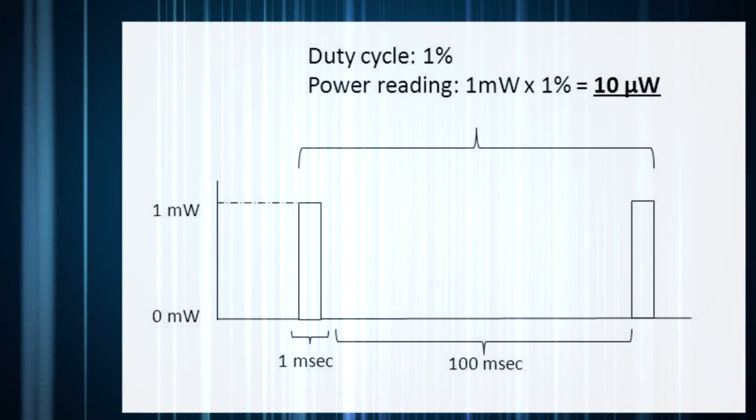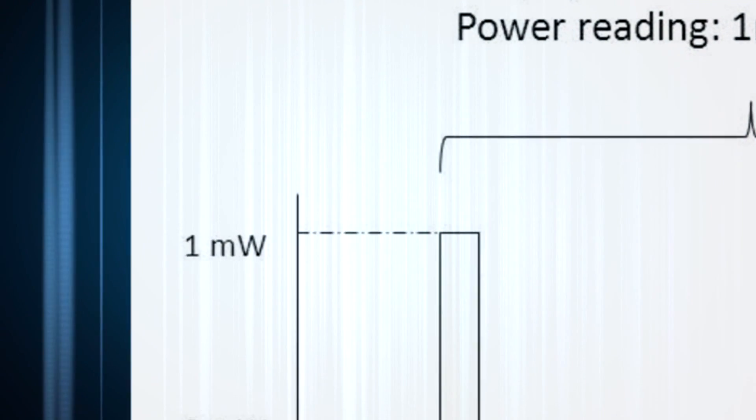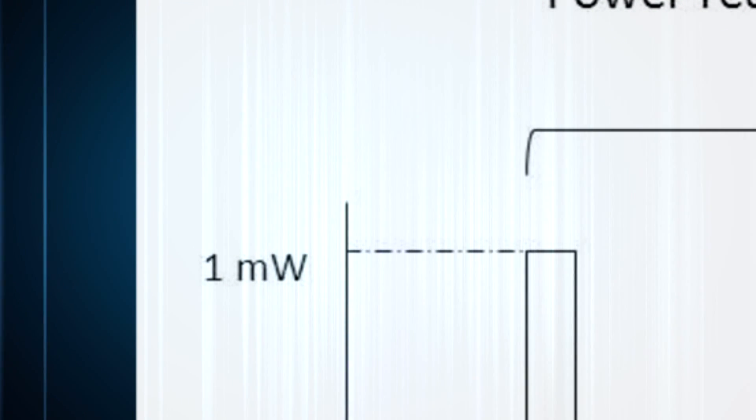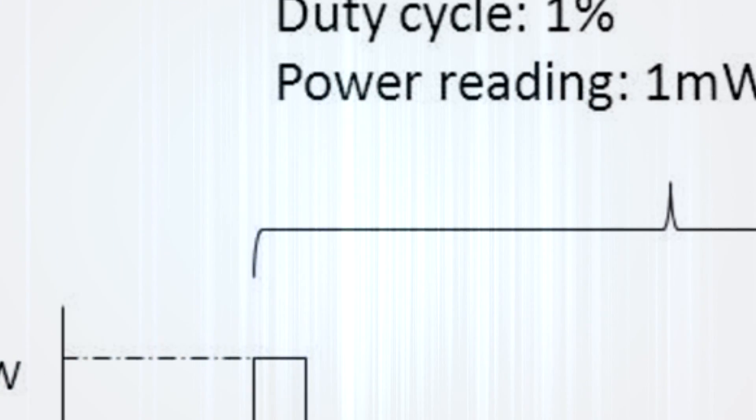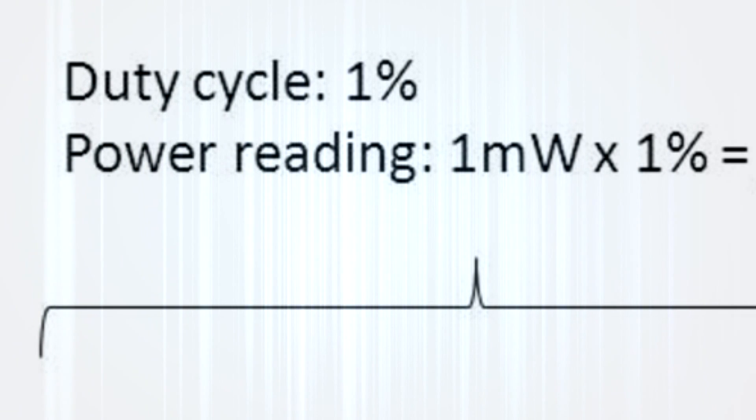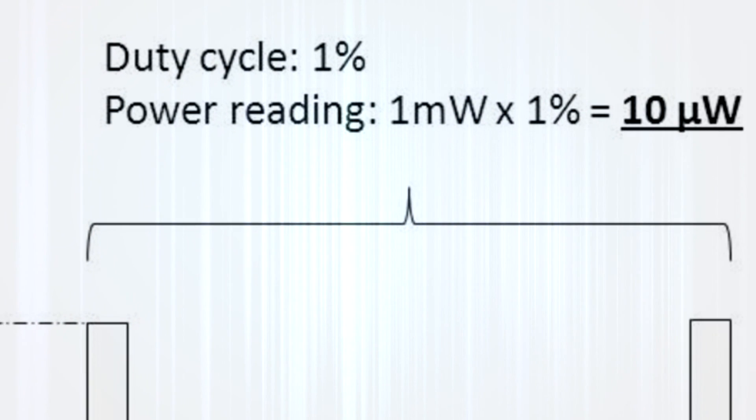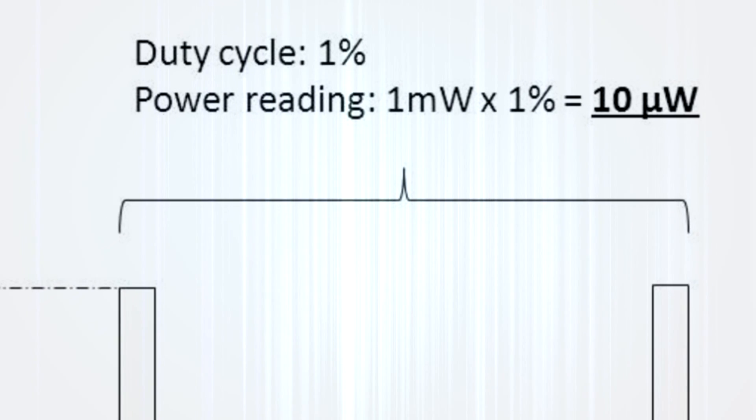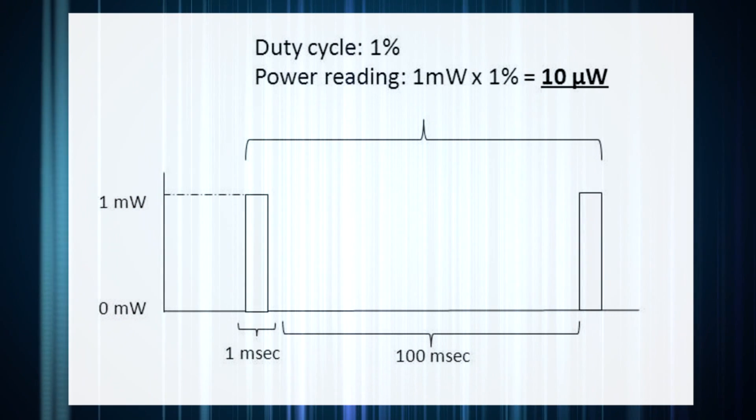Let's say we're trying to measure the power of a 1mW scanned beam with a standard photodiode power sensor, and the scan is such that the beam spends 1% of each cycle on the sensor. The average power reading of the sensor will be only 1% of the actual power in the beam.